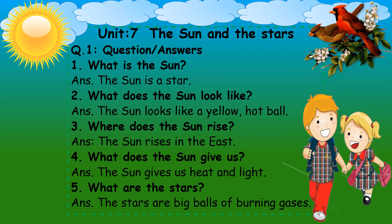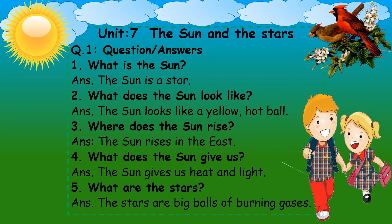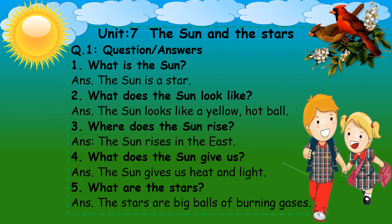Now dear students, we have to start our written work and we will learn more about the sun during this written work, so that you can learn more about the sun and the stars. So now take out your science notebook, prepare the page, draw the margin line on the left hand side, write down the date on the top and unit number and name in the first line. It's unit 7, the sun and the stars.